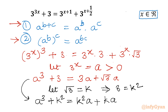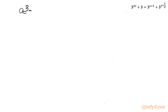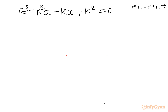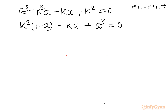Now I will frame one quadratic equation in k. Rearranging all terms to one side, the equation becomes: a³ − k²·a − k·a + k²·a = 0, which gives us k²(1 − a) + k·a + a³ = 0. This is quadratic in k, where capital A = (1 − a), capital B = a, and constant C = a³.